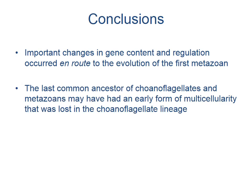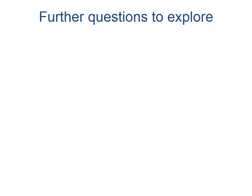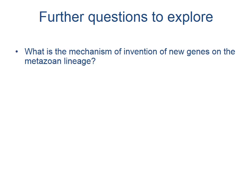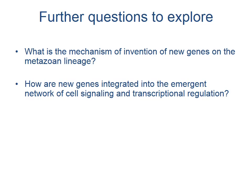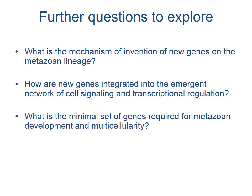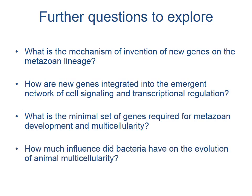Other questions that remain to be explored include: what is the mechanism of invention of new genes on the metazoan lineage? How are new genes integrated into the emergent network of cell signaling and transcriptional regulation? What is the minimal set of genes required for metazoan development and multicellularity? And how much influence did bacteria have on the evolution of animal multicellularity?